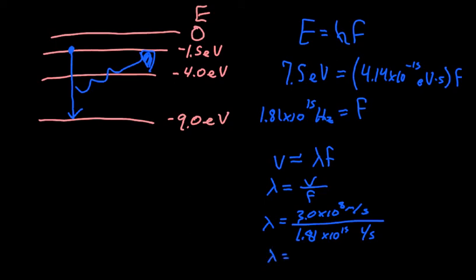And I get a wavelength of 1.66 times 10 to the negative 7th meters, or we often write that in nanometers, so that'd be 166 nanometers for the wavelength of the light that's produced, that's emitted when our electron drops from the negative 1.5 electron volt level to the negative 9 electron volt level.